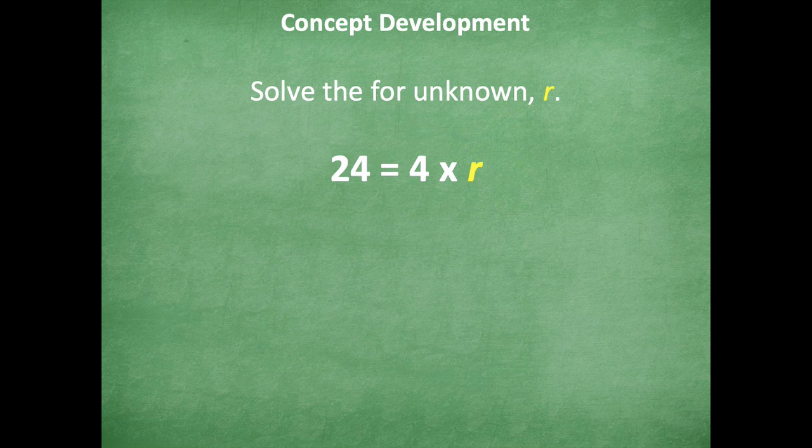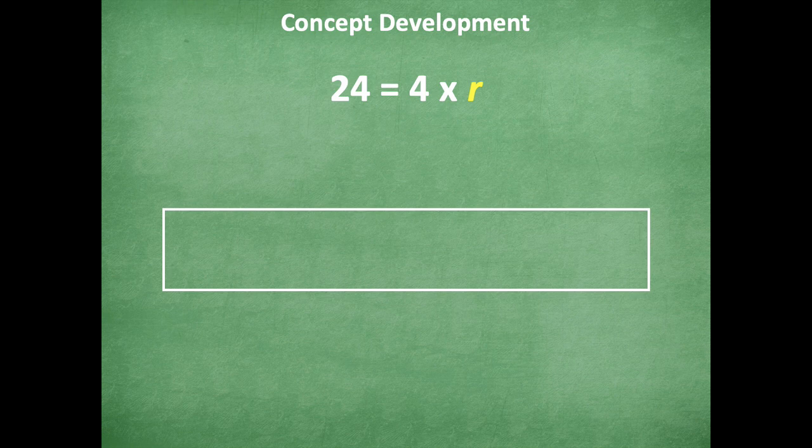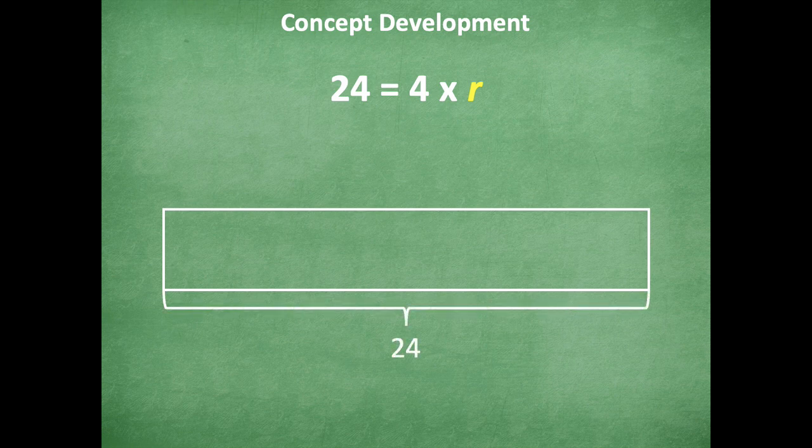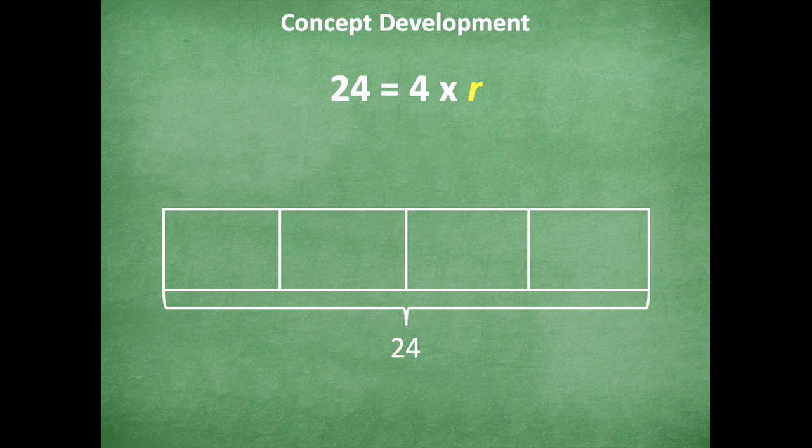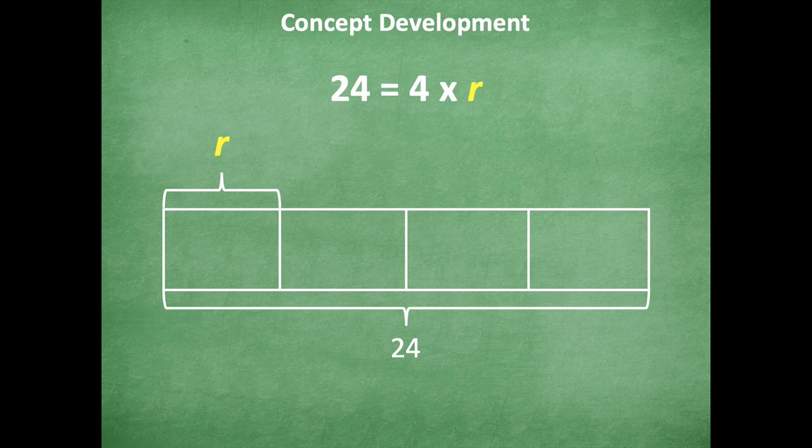All right, friends, make sure to pause if you need more time. Otherwise, here we go. So the way I solved this was I drew a tape diagram, and I said that the total was 24. And I knew that there are four groups. And I'm going to use, or, and then one group equals, sorry, represents r.